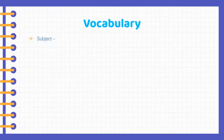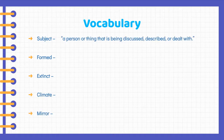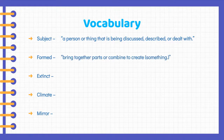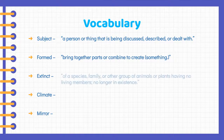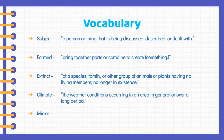Vocabulary. Subject means a person or thing that is being discussed, described, or dealt with. Formed means to bring together parts or combine to create something. Extinct means of a species, family, or other group of animals or plants having no living members — no longer in existence. Climate means the weather conditions occurring in an area in general or over a long period. Mirror means a reflective surface.